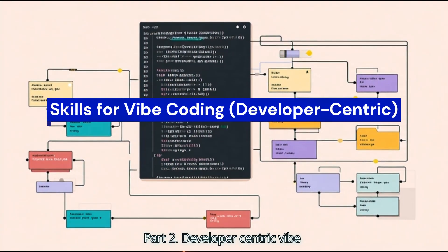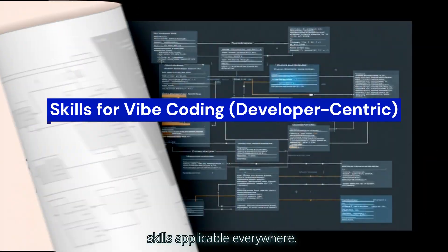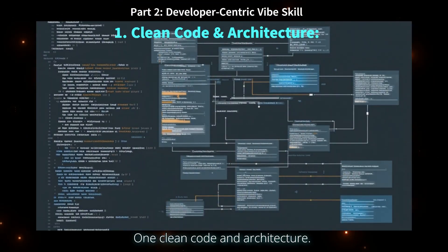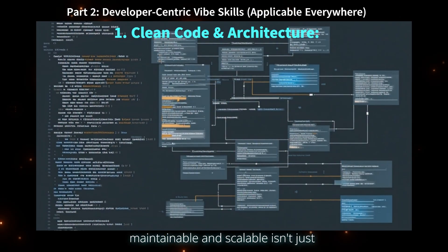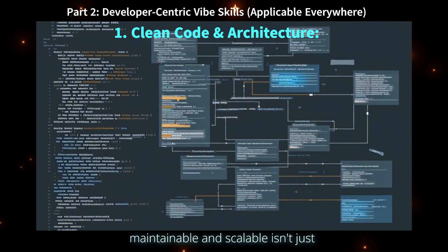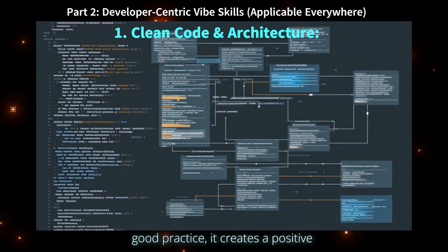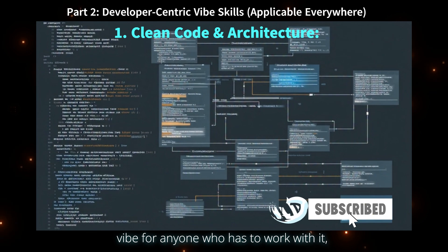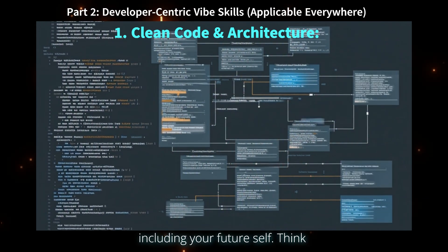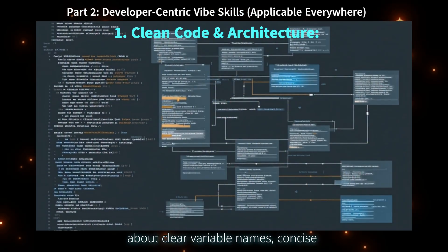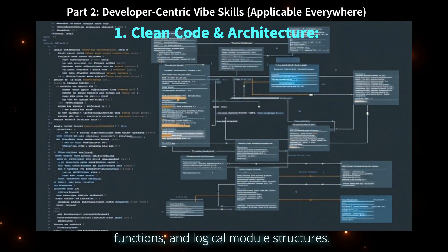Part two: developer-centric vibe skills, applicable everywhere. First, clean code and architecture. Writing code that's readable, maintainable, and scalable isn't just good practice — it creates a positive vibe for anyone who has to work with it, including your future self. Think about clear variable names, concise functions, and logical module structures.